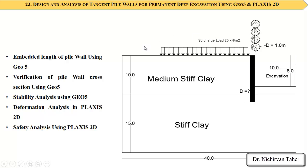The example we are going to simulate in Plaxis 2D is shown in this slide. We have the soil stratigraphy with two soil layers: at the first 10 meters we have a medium stiff clay, and in the bottom layer we have a stiff clay. We also have a retaining structure which is a tangent pile wall to be constructed.